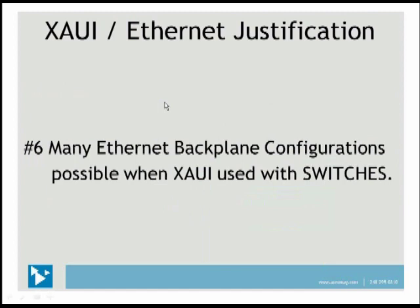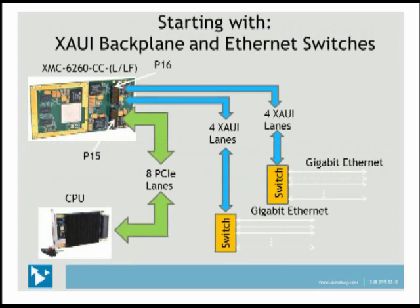Many Ethernet backplane configurations are possible when you use XAUI with switches. Acromag's new XMC-6260 CC (conduction cooled) has a P15 and P16 connector. The P15 connector has eight PCIe lanes that talk back to the CPU. Off of the P16 connector, we have two groups of XAUI lanes — four XAUI lanes each — and we're bringing those out to a switch, from which we'll get gigabit Ethernet out.